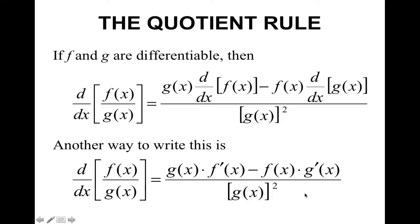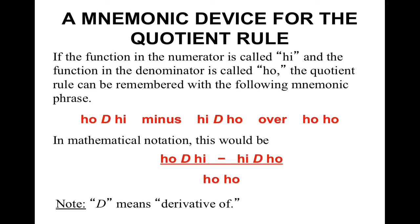There's a fun mnemonic device to help you remember the quotient rule. If the function in the numerator is called 'high' and the function in the denominator is called 'ho,' the quotient rule is remembered as: ho d high minus high d ho, over ho ho. In mathematical notation, d means the derivative of, so it's ho times the derivative of high, minus high times the derivative of ho, all over ho ho.